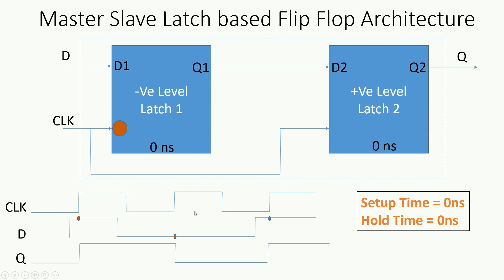Let us see how these two latches together behave as a flip flop. In the waveform, this is the clock signal and D is the input. As expected from a positive edge triggered flip flop, at the first positive edge the value of D is high, so Q will become high. At the next positive edge D is 0, so Q will go to 0 and hold its value for the entire clock period. At the following positive edge D is high again, so Q will become high and hold its value for the entire period.